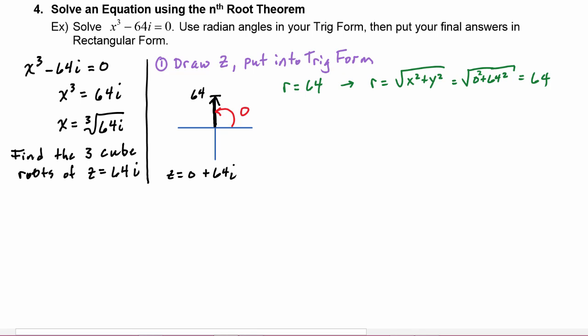Theta - very easy to see we have to be in radian angles in this problem, so θ will be π/2. So in trig form, z = 64 cis(π/2).